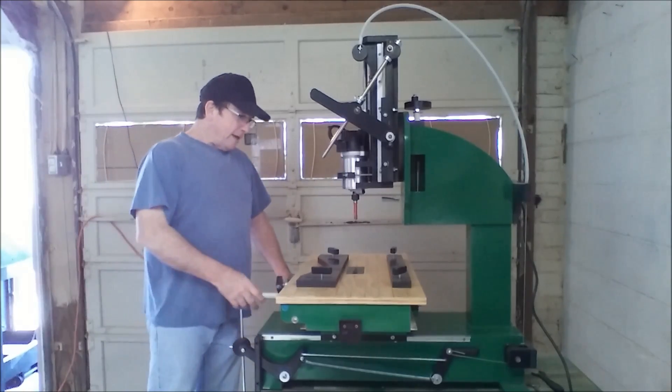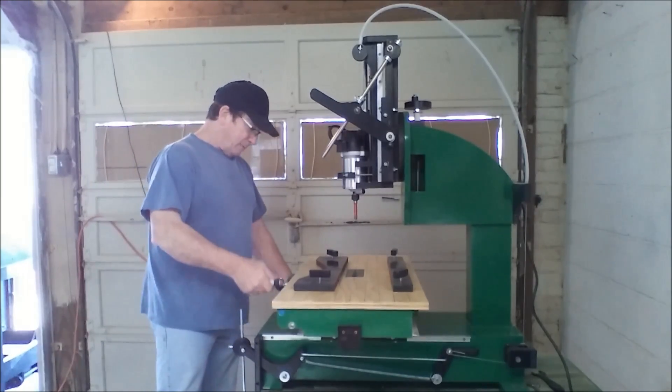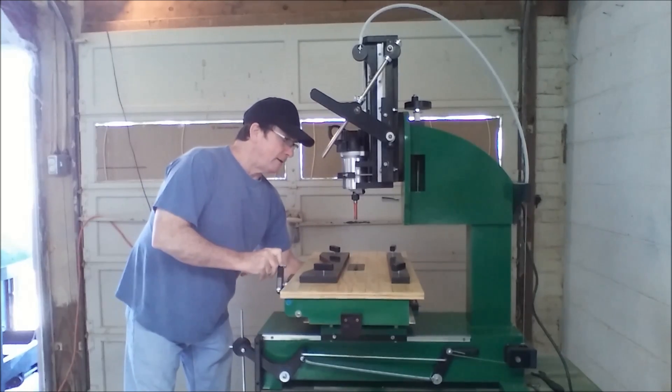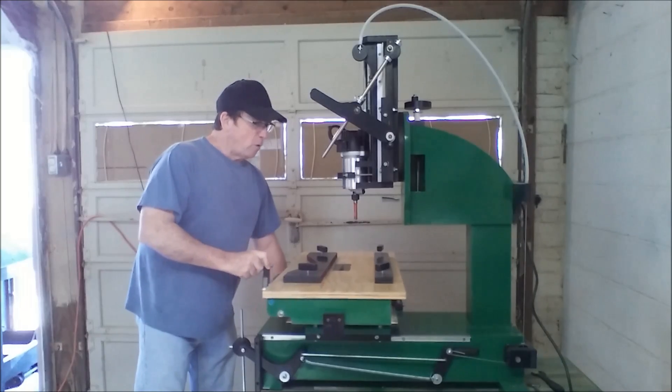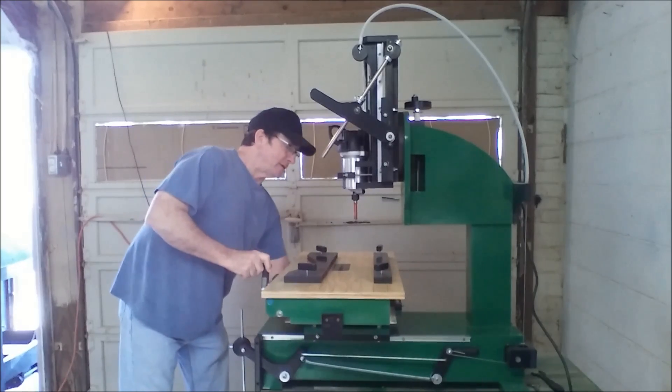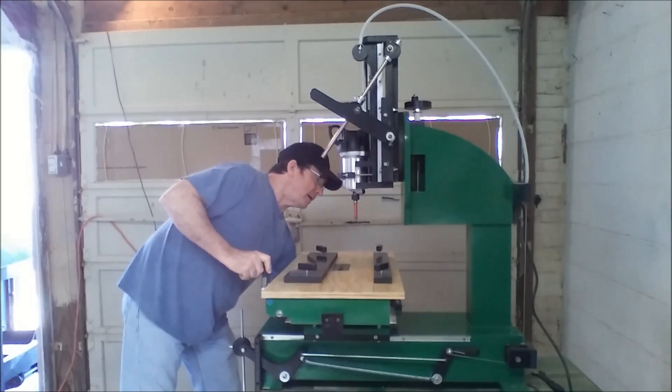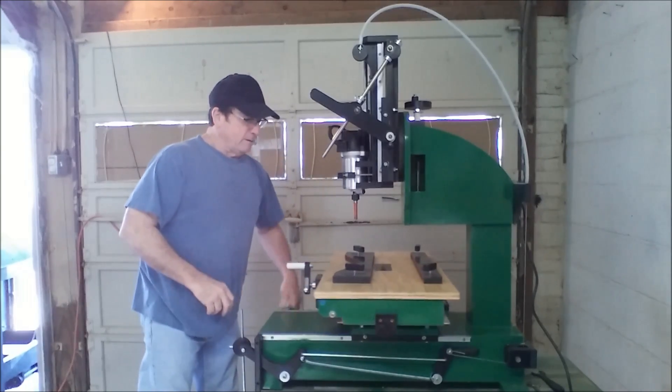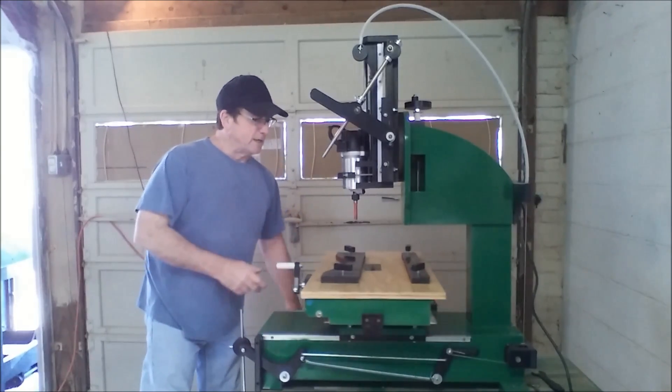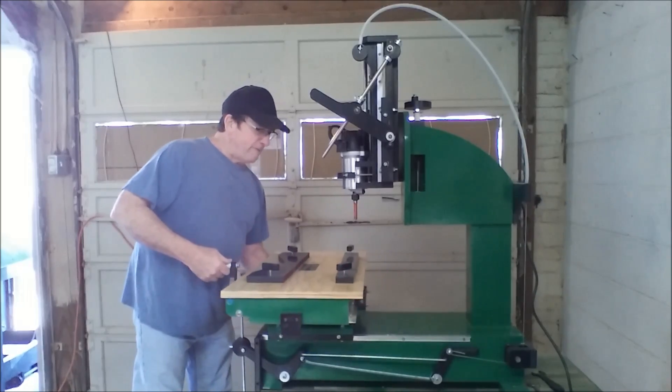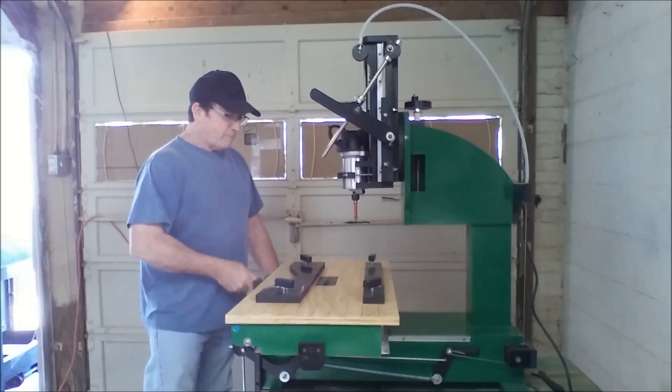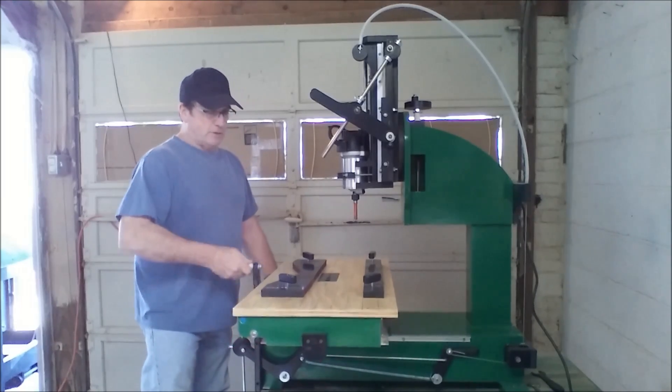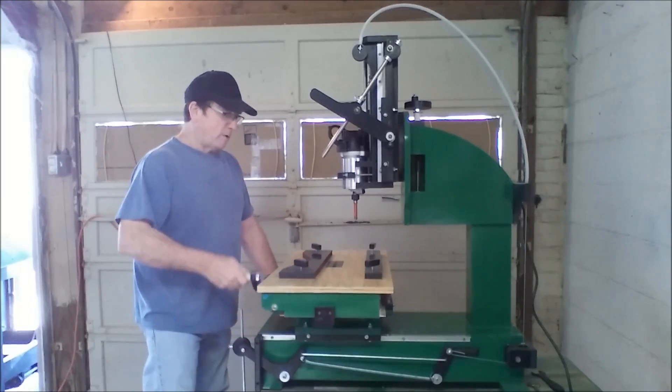As far as table movement and everything, it's still the same as my big machine. And like I said, it's just a smaller movement. But there's still quite a bit of movement on it. I've got my stop set right now. You can see the movement that it does have. You have about 16 inches front to back and about 28 inches of total movement right to left.